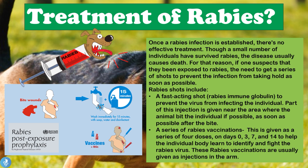The best first step is to immediately wash the bite wound thoroughly for at least 15 minutes with soap and water and disinfectant. The patient then needs to go to the hospital immediately, where they will receive that first fast-acting shot of rabies immune globulin and then return on the third, seventh, and fourteenth day to receive the series of rabies vaccinations. The first vaccination is given on day zero along with the immune globulin shot, then one shot each on days 3, 7, and 14.